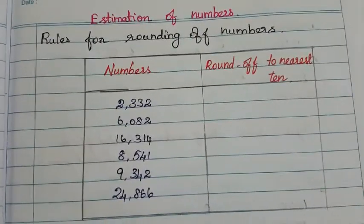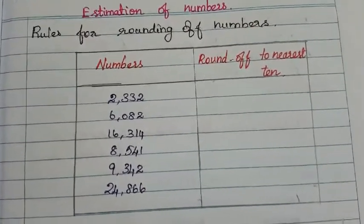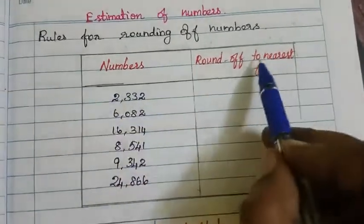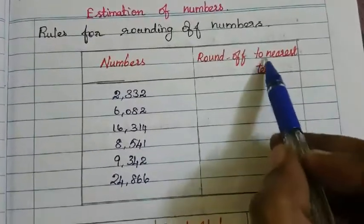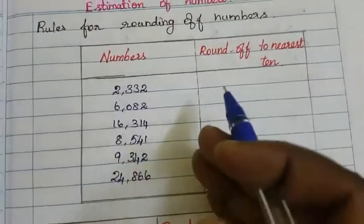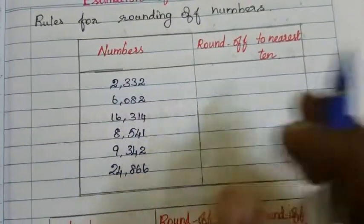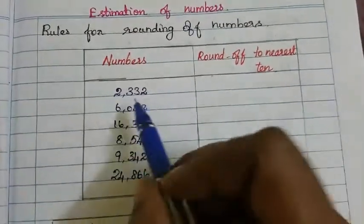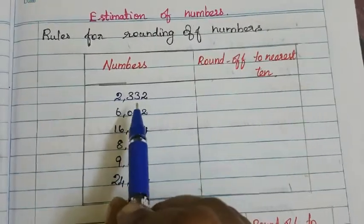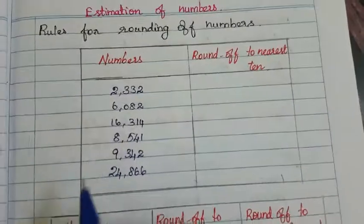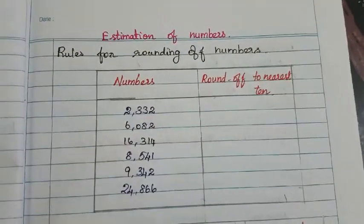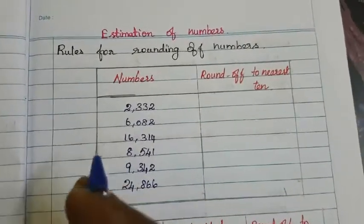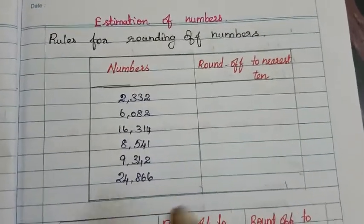The first rule is you have to decide the place up to which the number has to be rounded off. For example, if the title says round off to nearest 10, then we have to decide that we are going to round off to the tens place. So whenever you are doing rounding off, the first rule is to decide the place — deciding the place. This is the first rule.